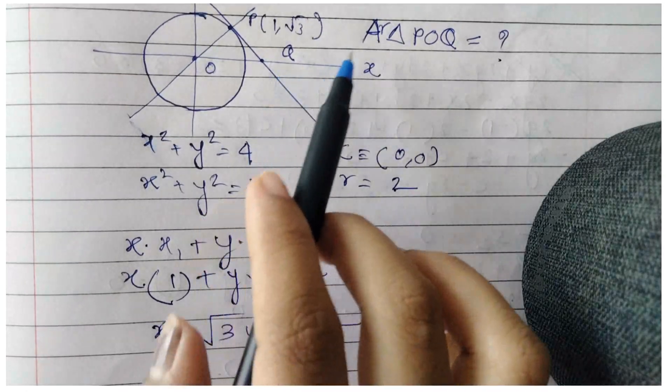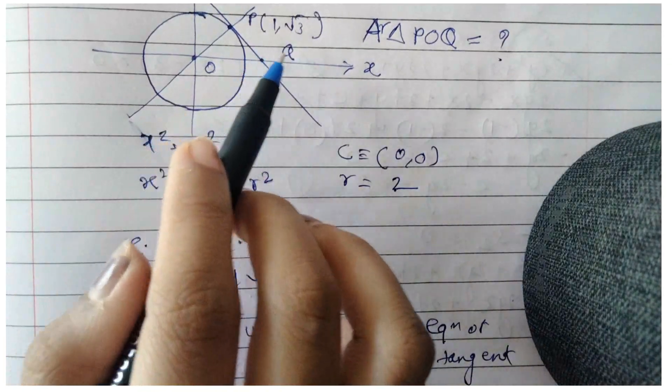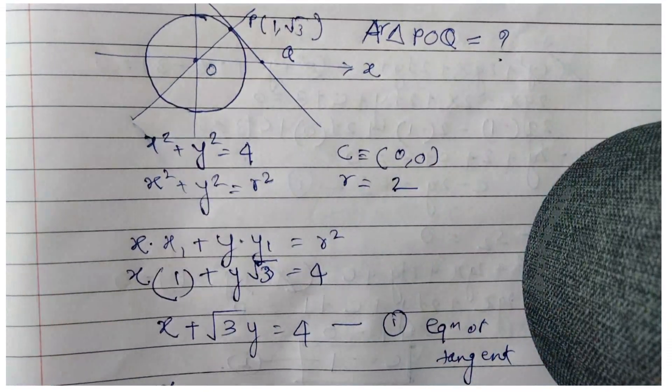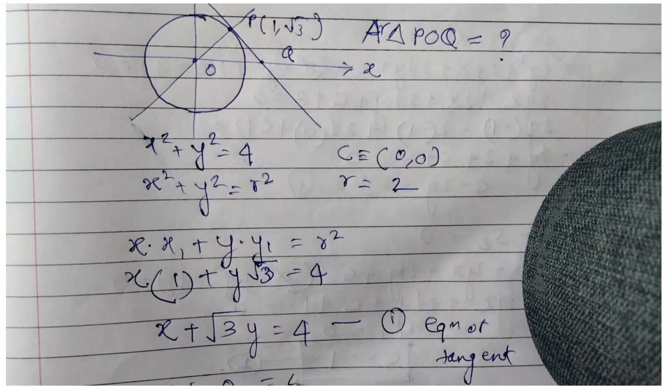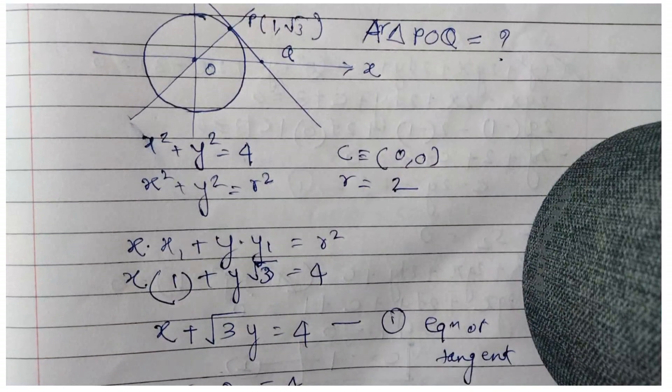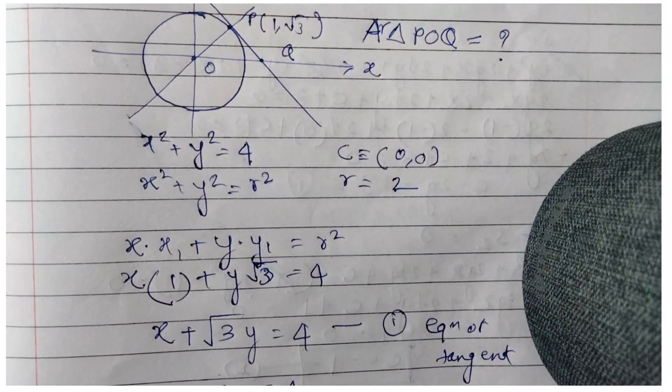Now substitute y = 0 to get point Q. So x + 0 = 4, hence x = 4. The coordinates of Q are (4, 0).